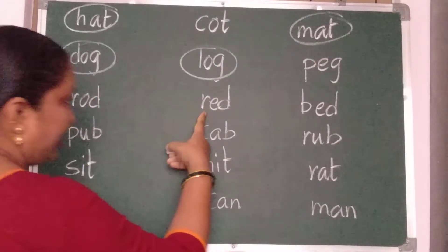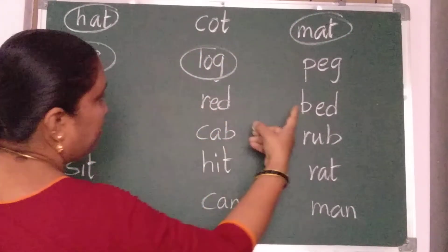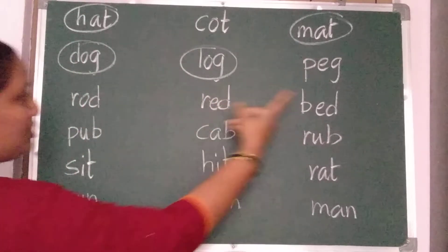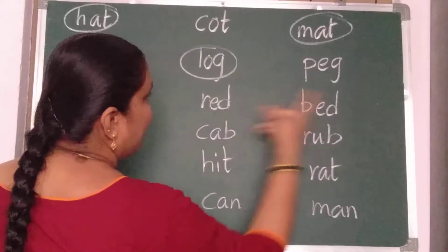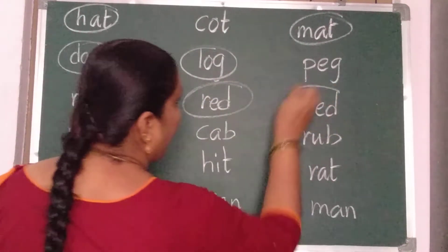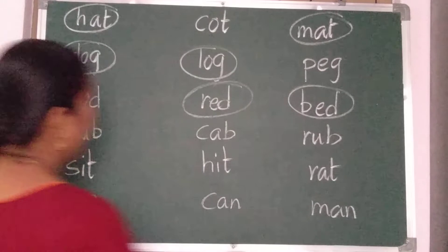R, O, D — rod. R, E, D — red. B, E, D — bed. These two words are similar — rhyming. Red, bed.